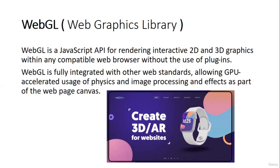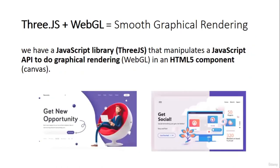So when we merge these two technologies together, we can easily create 3D websites. To summarize: using Three.js, we are going to use Three.js, which in turn uses WebGL for smooth graphical rendering. So we have a JavaScript library — Three.js — that manipulates the JavaScript API to do graphical rendering using WebGL. And this WebGL affects the HTML component which is canvas.